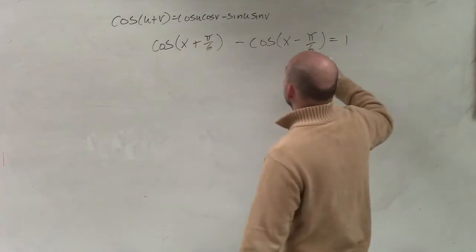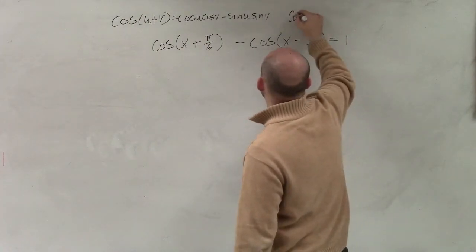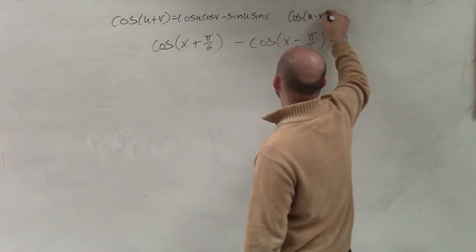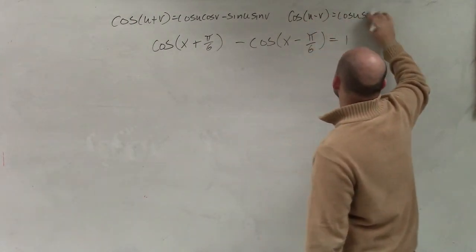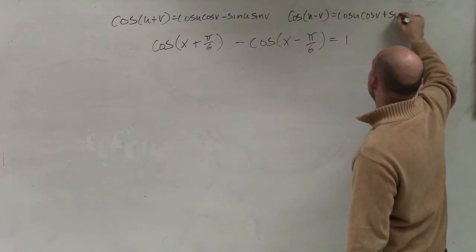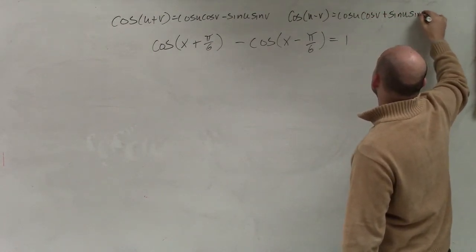Again, guys, we have to make sure we're using the correct formula. And then I also have over here, I'm doing the difference of two angles. So that's going to be cosine of u minus v, which equals the cosine of u times the cosine of v plus the sine of u times the sine of v.